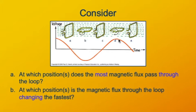So we have the greatest flux at A, C, and E. The fastest flux change at B and D.